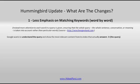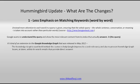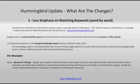In essence, Google wants to understand the query and show the most relevant content from its index that actually answers it. And if you've heard of the Google Knowledge Graph that was released in May 2012, then this is kind of an extension from that. The Knowledge Graph is used both behind the scenes to help Google improve its search relevancy and also to present Knowledge Graph boxes within its search results that provide direct answers.